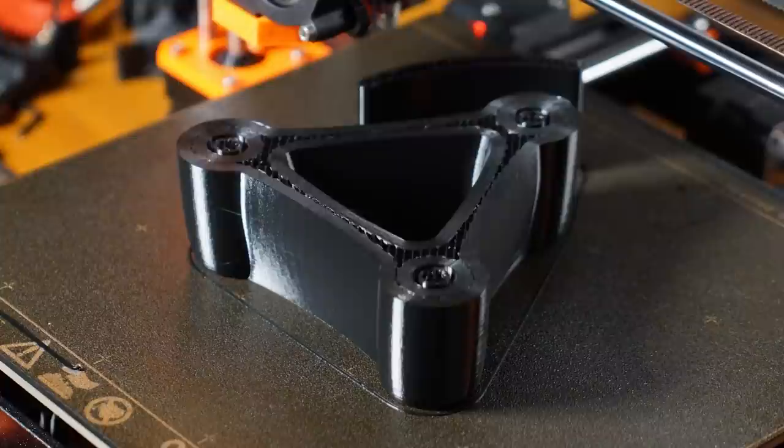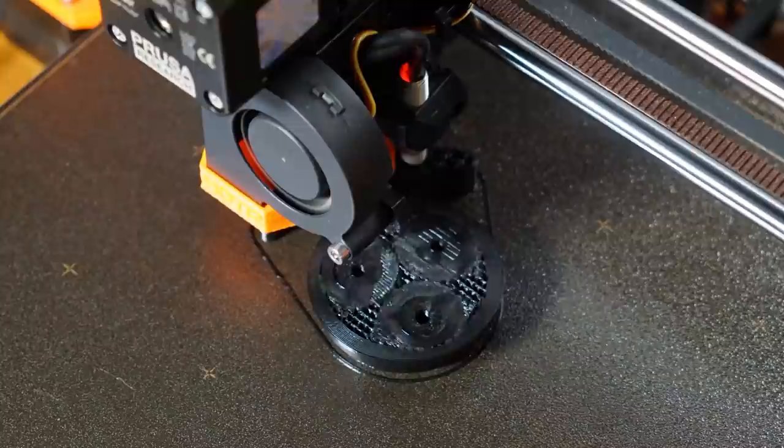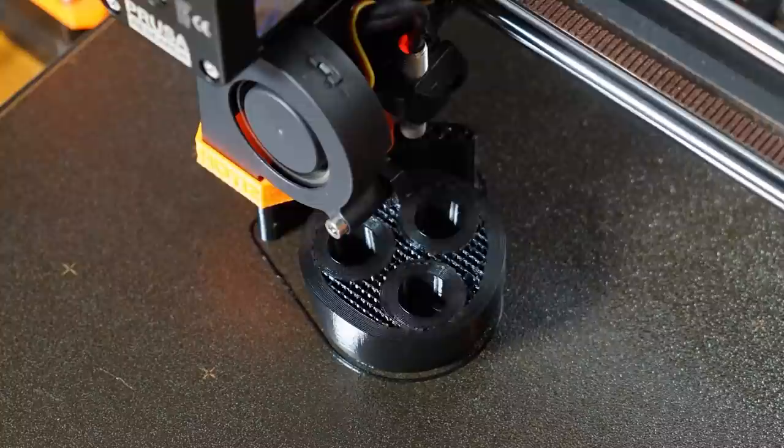The orange material printed a lot better than the black did. There was blobbing and stringing that ended up all over the place, and many failed prints were the result. All manner of different print settings were attempted, but with few positive results. Doing a lot of perimeters seemed to produce the nicest looking parts and the least failed prints.